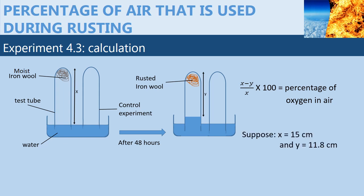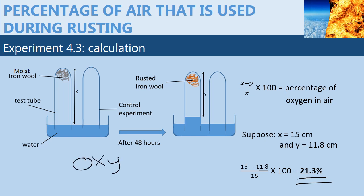Suppose x is 15 cm and y is 11.8 cm, then the percentage of air used during rusting can be calculated as follows. From this calculation, we find that the percentage used is 21.3%. This is very close to the accurate figure of 21%, which is the volume of oxygen, showing us that oxygen is used up in rusting.